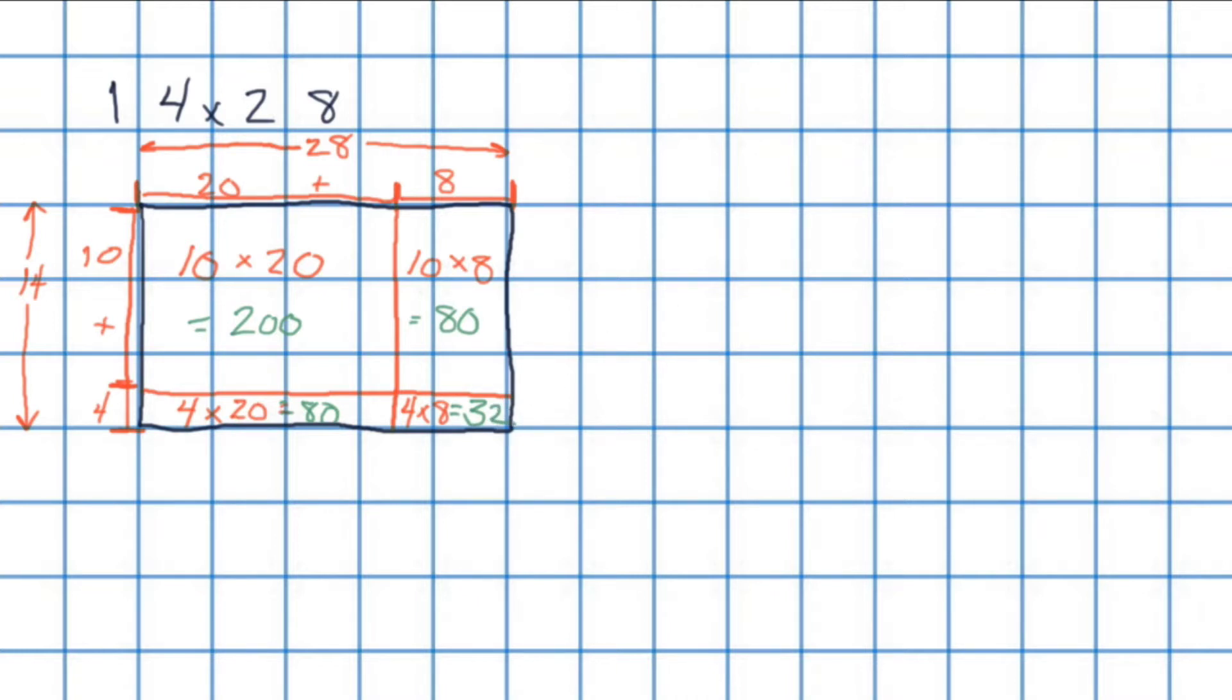Now all we need to do, as we did in our first example, is add these numbers together. So we will do 200 plus 80 plus 80 plus 32. And this time, I am making use of our graph paper and lining up all our 1s, 10s, and 100s. So now when we add 0 plus 0 plus 0 plus 2 is 2. 0 plus 8 is 8. Another 8 makes 16. And 3 makes 19. Carry the 1. And 2 plus 1 is 3. So the area of our large rectangle here, our whole rectangle, is 392. Which also means that our multiplication, 14 multiplied by 28, is equal to 392.